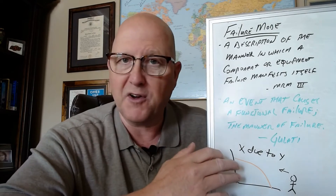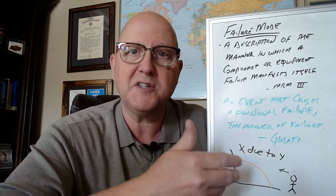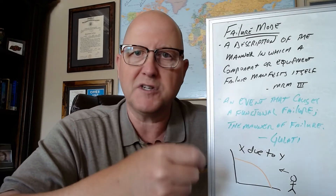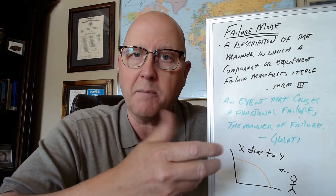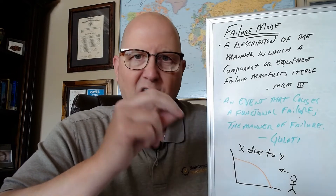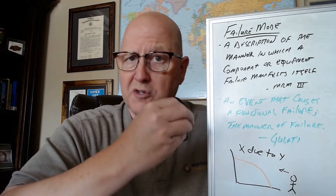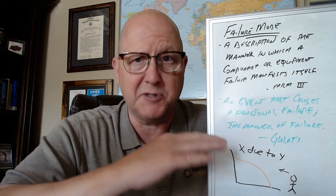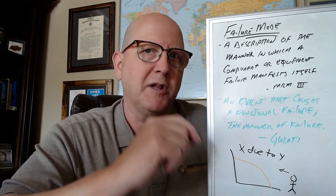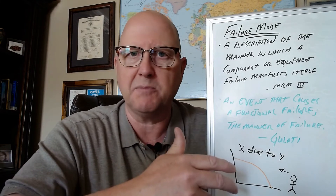If the failure mode is the belt wears due to normal usage, our preventive maintenance is going to be looking for signs of wear on a belt. Is it fraying? Is it glazing? Are there missing components? There's probably going to be some wear during normal usage, but we're going to be looking and measuring for excessive wear and then take action based on that.